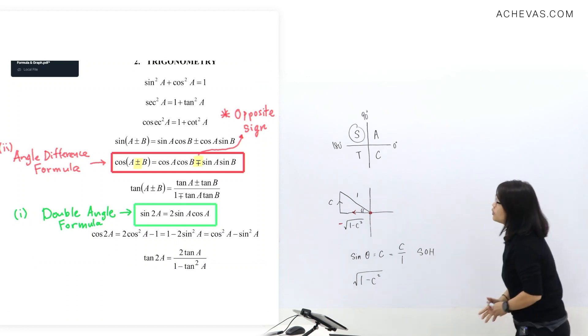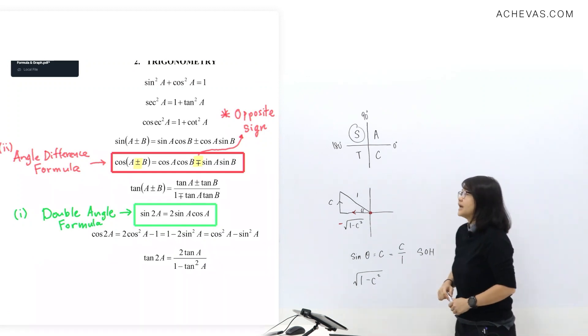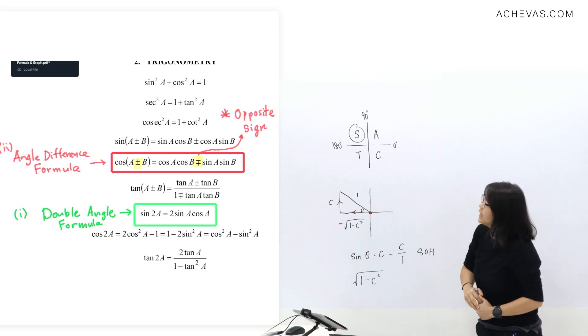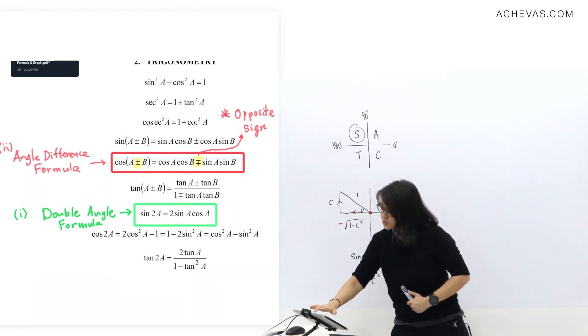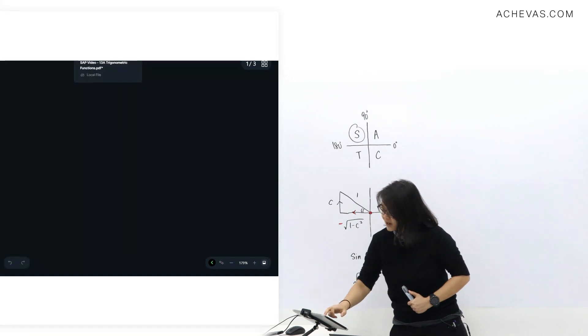I have boxed out that two that you can use. So part 1, we're going to use double angle formula, and part 2, we're going to use the angle difference formula. And just be careful because for cosine version, you need to take an opposite sign. Okay, now let's go back to this question here. We'll do one by one.